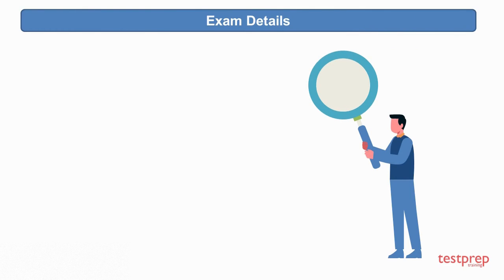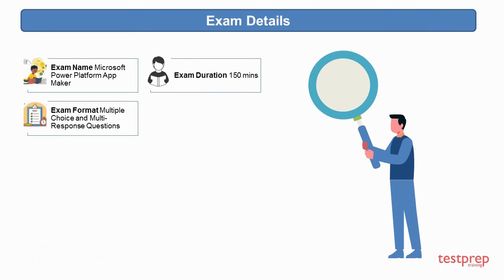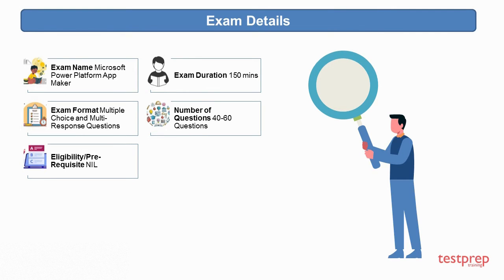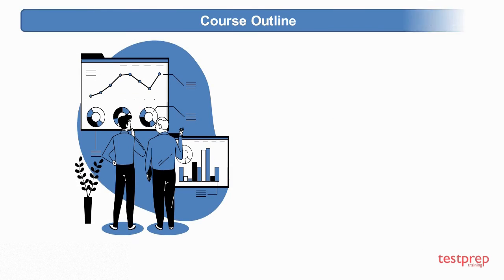Exam details: 1. Exam name is Microsoft Power Platform App Maker. 2. Exam duration is 150 minutes. 3. Exam format is multiple choice and multi-response questions. 4. Number of questions are 40 to 60. 5. Eligibility or prerequisite is nil. 6. Exam fee is 165 US dollars. 7. Exam language is English. 8. Pass score is 700 on a scale of 1 to 1000.